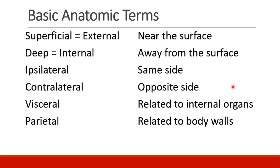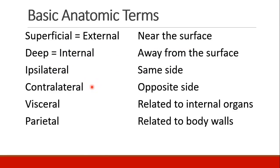The last thing I'd like to do in this introductory section is to review a few basic anatomic terms. We have terms like superficial or external, which refer to things that are near the surface, and the opposite of that is a structure that is deep or internal, which means it's away from the surface. Ipsilateral and contralateral are terms that tell us that something is on the same side or the opposite side as a reference point.